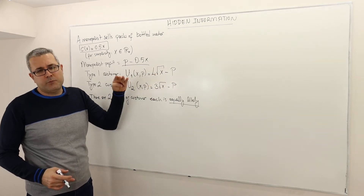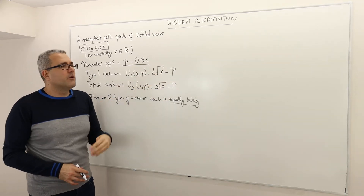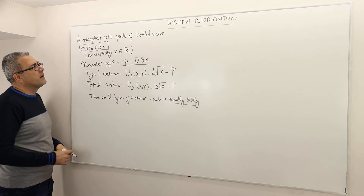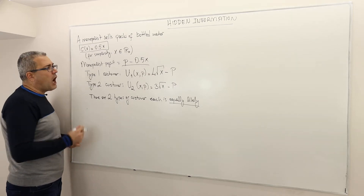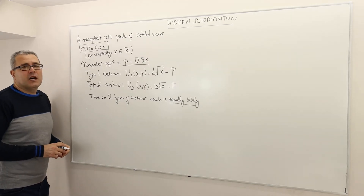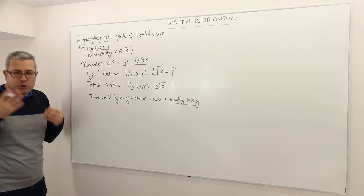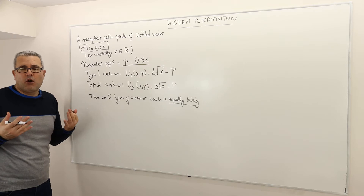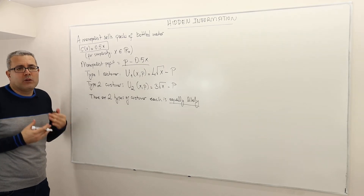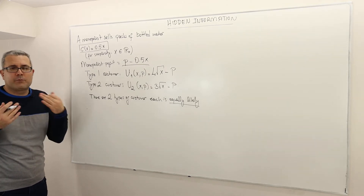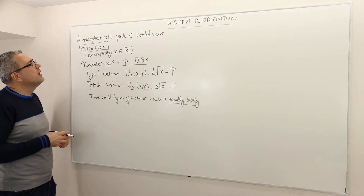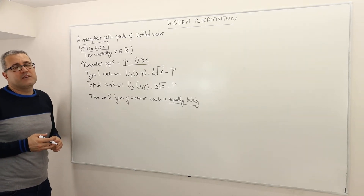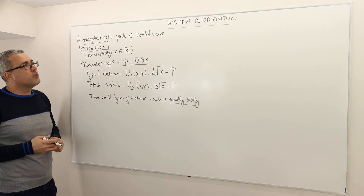Type 1 customer has this utility — the V function. The utility depends on X and P. The utility of the first type is 4√X − P, and for type 2 it is 3√X − P. Whenever they both consume the same amount of X, customer 1 gets higher utility, so his willingness to pay is higher than customer type 2. This is the high-willingness-to-pay customer and this is the low-willingness-to-pay customer. So the question is: what is the optimal package or contract here? I'm going to call them bundles or packages — what are the profit-maximizing packages?